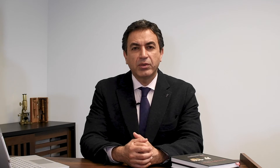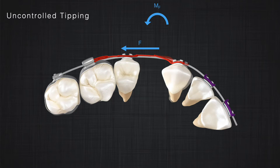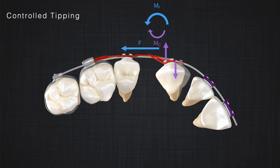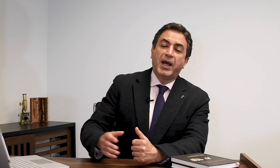Therefore, at the start we're going to have uncontrolled tipping, assuming the wire does not touch the bracket yet. But sooner or later the bracket starts to touch the wire at the corner, and depending on the ligation we have, there will be a couple in the system. If we tie the canine to the wire very tightly, this couple appears much faster. On the other hand, if we tie the wire to the bracket loosely, this couple appears later. Depending on how we tie the wire to the bracket, the type of tooth movement can be different. After uncontrolled tipping, a small couple appears in the system and produces controlled tipping, and very soon the magnitude of the couple increases enough to produce bodily movement.